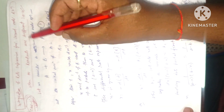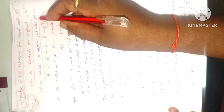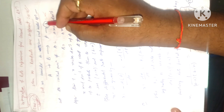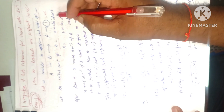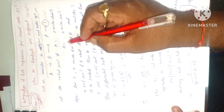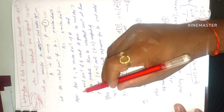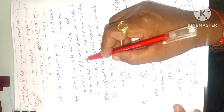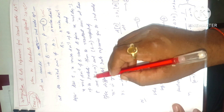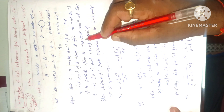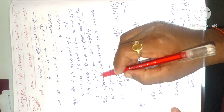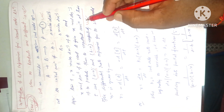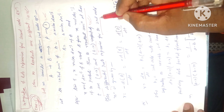Consider a second order reaction A + B → P (equation 1). Let the initial concentration of A be 'a' mol dm⁻³ and initial concentration of B be 'b' mol dm⁻³. At time t, 'x' mol dm⁻³ of A and 'x' mol dm⁻³ of B react to give 'x' mol dm⁻³ of product. Thus the reactant concentrations at time t are (a − x) and (b − x) respectively.